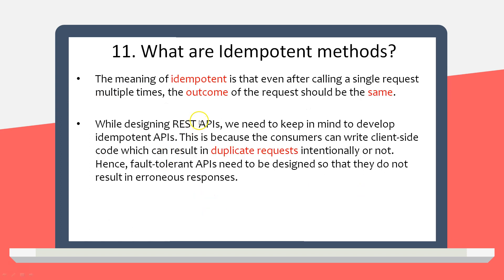Next question: what are idempotent methods? The meaning of idempotent is that even after calling a single request multiple times, the outcome of the request should be the same. It is the responsibility of developers to design idempotent APIs — it depends on how you write your code.